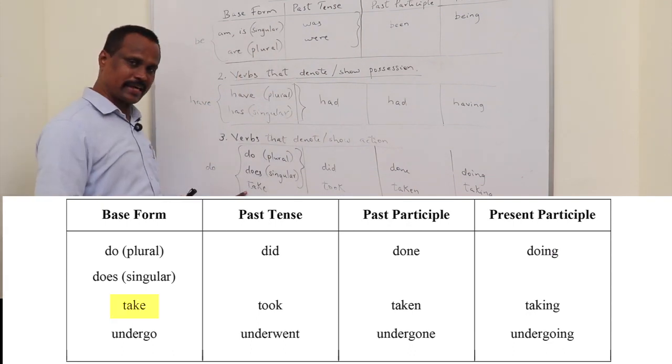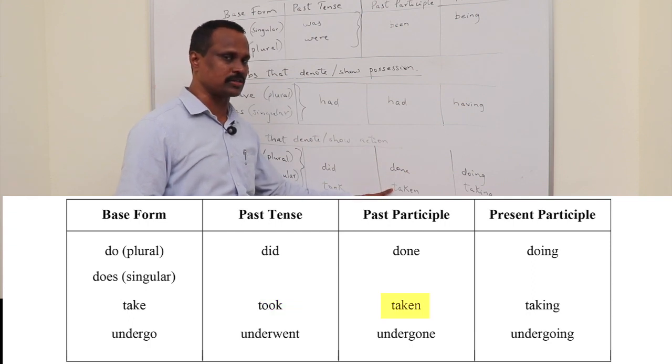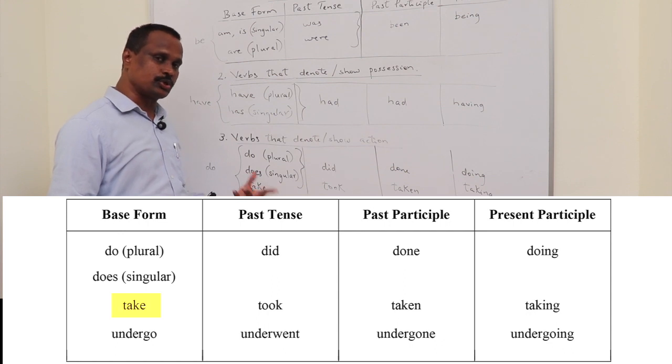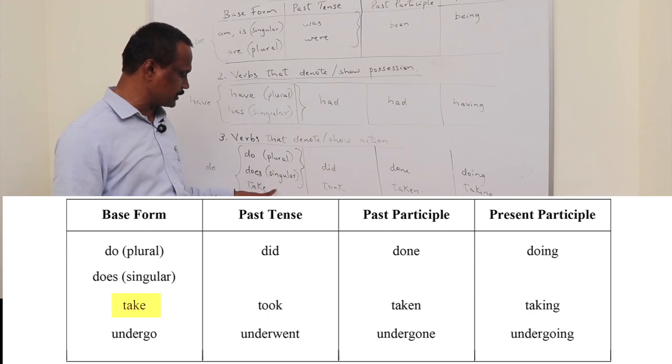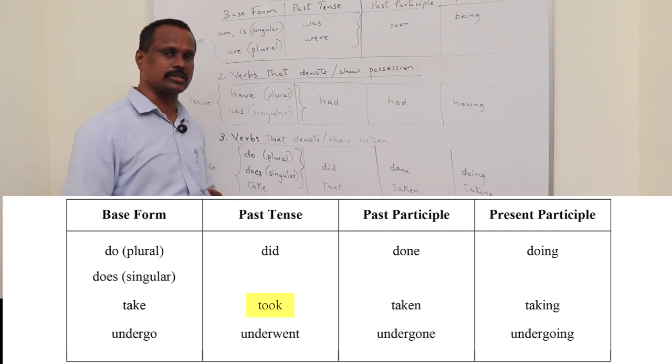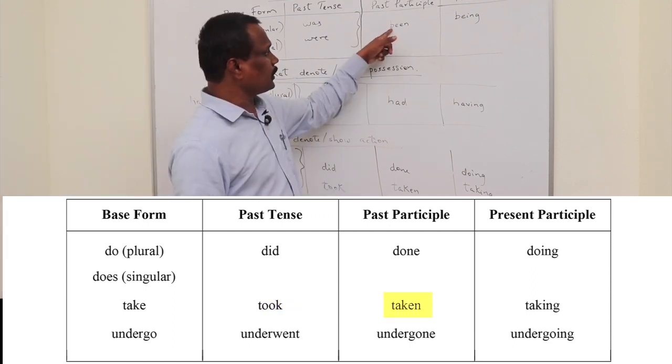For example, another verb that is take, which changes to took in the past tense, taken in the past participle form. The patient takes this medicine usually or regularly or twice a day or thrice a day. Here it is plural, but otherwise it is takes for the singular subject. And when you're talking about a past situation, the patient took this medicine last night or this morning,